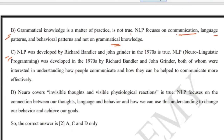Option C — NLP was developed by Richard Bandler and John Grinder in the 1970s — is true. Both were interested in understanding how people communicate and how they can be helped to communicate more effectively. Option D — neuro covers invisible thoughts and visible physiological reactions — is also true. NLP focuses on the connection between thoughts, language, and behavior and how we can use this to achieve our goals. So A, C, and D are correct.